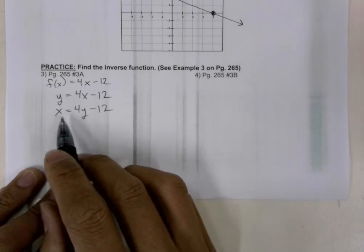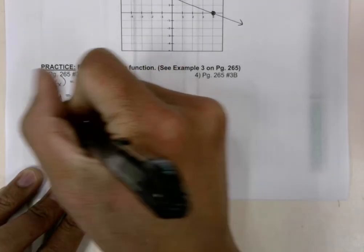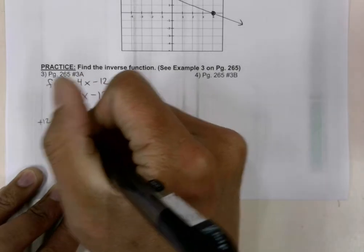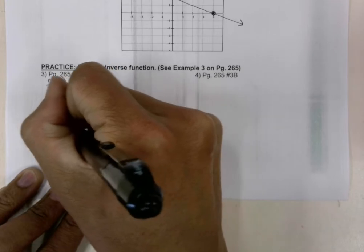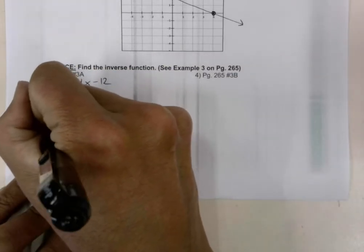So let's go ahead and do that by moving the 12 to the other side of the equal sign. And what we're left with is 4y is equal to x plus 12.